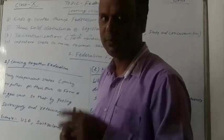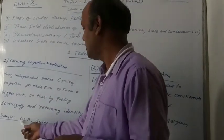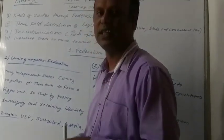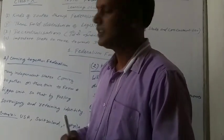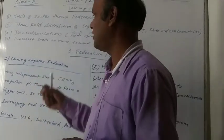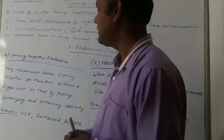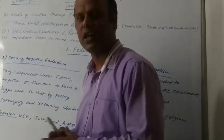We have two examples of such type of federation: USA, Switzerland, and Australia. These countries have coming together federation.